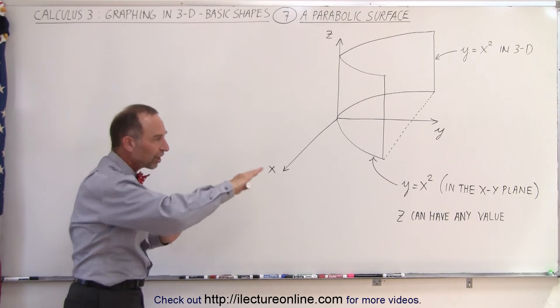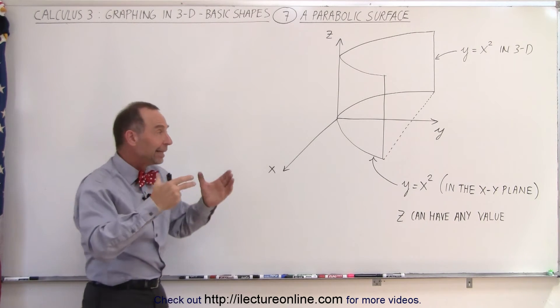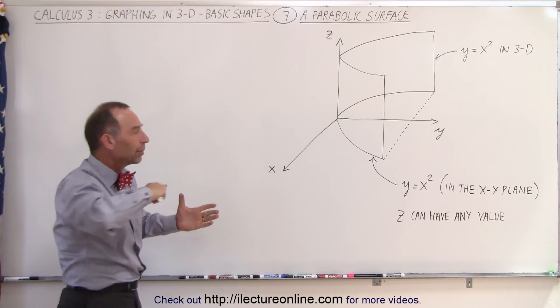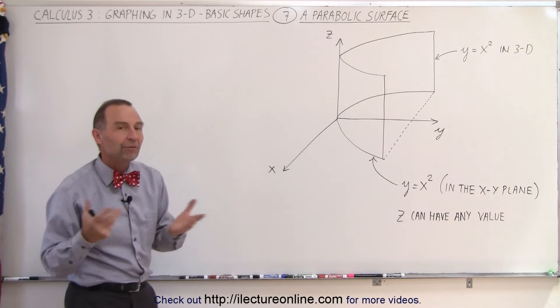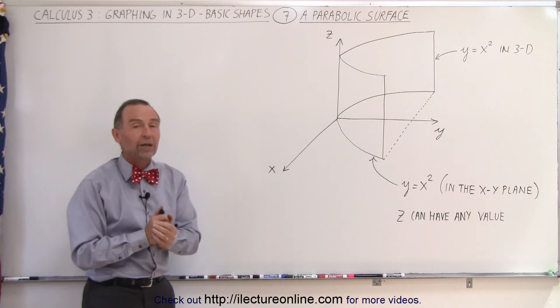And the cross-section parallel to the xy plane then gives you a parabola in the xy plane defined by the equation. In this case, y equals x squared.